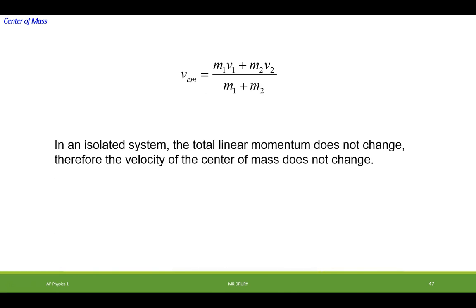In an isolated system, the total linear momentum doesn't change. Therefore, the velocity of the center of mass doesn't change. So wherever the center of mass was going before the collision, it has to continue in the same direction at the same speed after the collision.